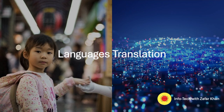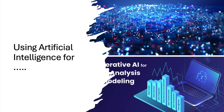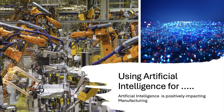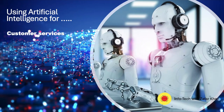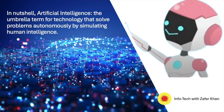You can also say that artificial intelligence is a computer algorithm which exhibits intelligence through decision making. In most practice, data scientists are using artificial intelligence for smaller practical skills to solve real world problems such as data analysis, manufacturing, and customer service. In a nutshell, artificial intelligence is the umbrella term for technology that solves problems autonomously by simulating human intelligence.